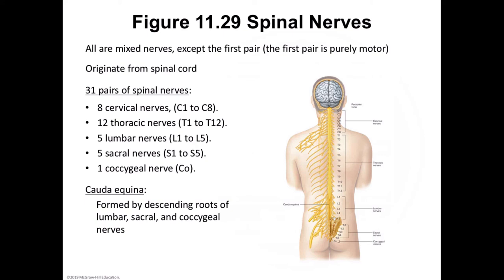There are 31 pairs of spinal nerves: eight cervical nerves (C1–C8), 12 thoracic nerves (T1–T12), five lumbar nerves (L1–L5), five sacral nerves (S1–S5), and one coccygeal nerve. A helpful mnemonic is the times you eat: breakfast at 8, lunch at 12, and dinner at 5 — twice at 5 — giving you 8, 12, 5, 5, and 1.